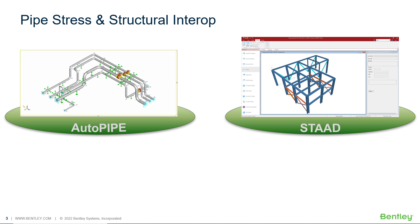Once both teams have their models and analysis passing their own criteria, the integration can start. This is done by exporting the piping model, the supports, and the loads from AutoPipe to STAAD through a file called a pipe link file.